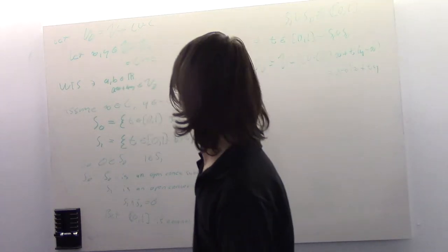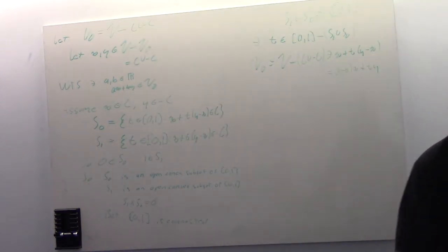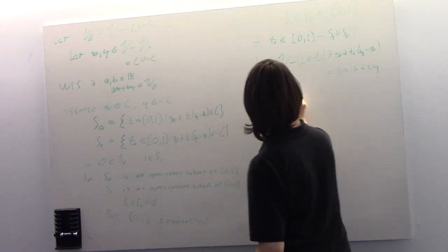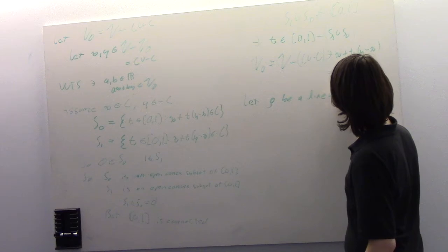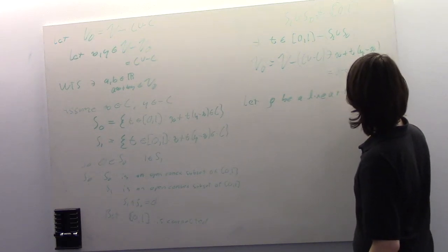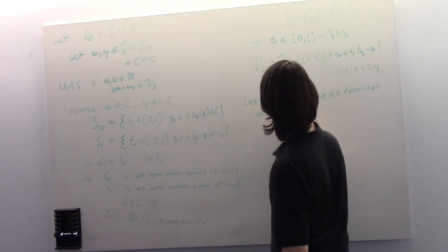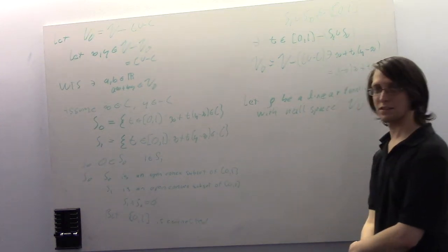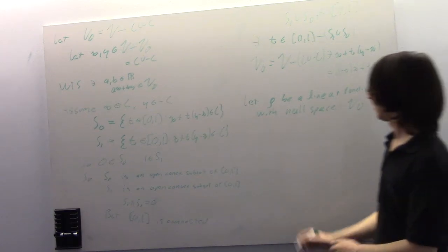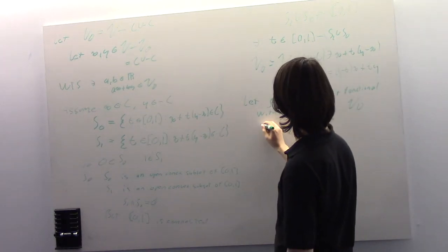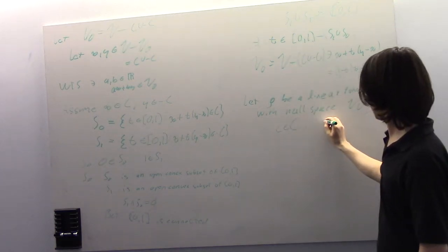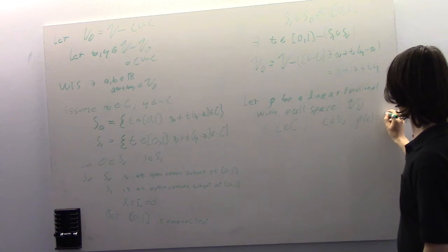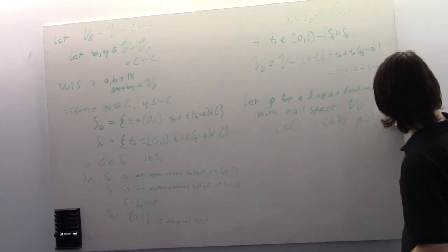We're getting into the endgame. We have our V-naught. Let rho be a linear functional with null space V-naught. We know that for all c in C, c is not in V-naught, so rho of c does not equal zero.